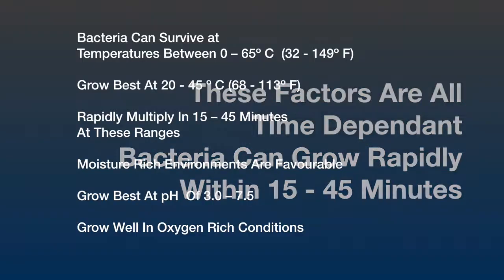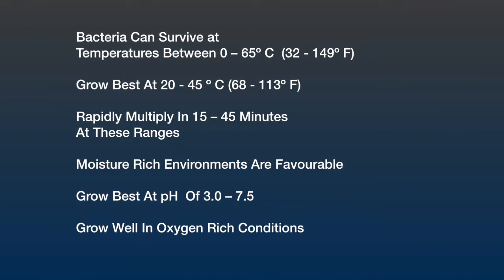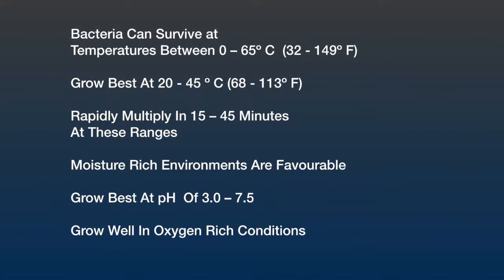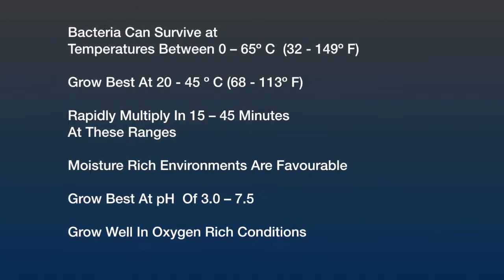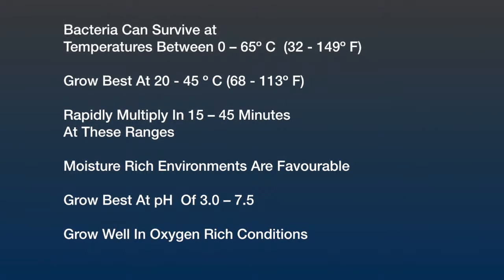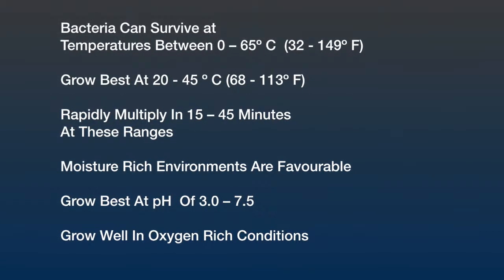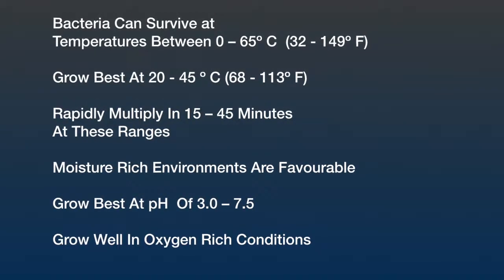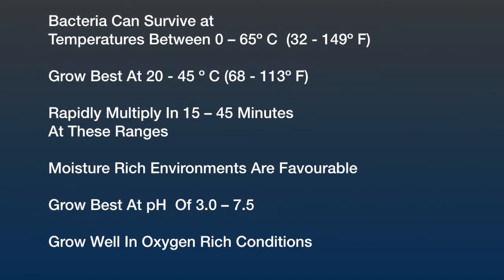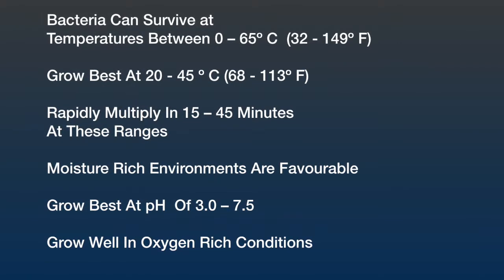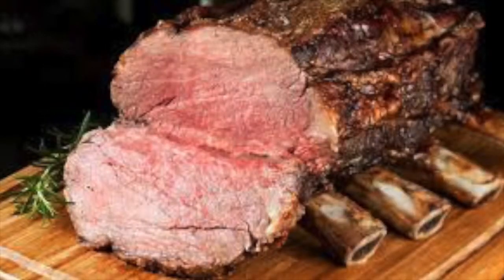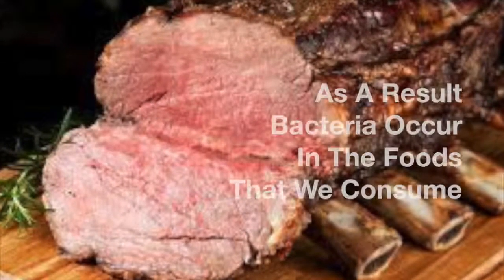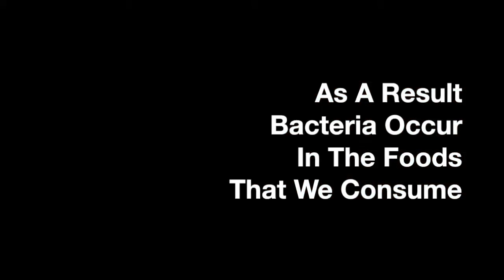So to summarize: bacteria can survive in temperatures between 0 to 65 degrees Celsius and grow best at 20 to 45 degrees Celsius. They rapidly multiply within 15 to 45 minutes. Moisture-rich conditions are ideal, they can survive at a pH between 3 and 7.5, and can grow in both oxygen-rich and poor conditions. As you can see, bacteria are very similar to humans in what they need to survive, which is why human-associated bacteria grow in the food we consume.